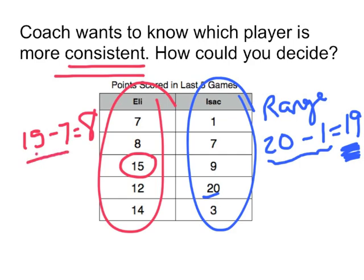Eli didn't score as many points, but he didn't drop as low either. So his range was only 8. So Eli is the more consistent player, because his points scored were closer together. He had a smaller range.